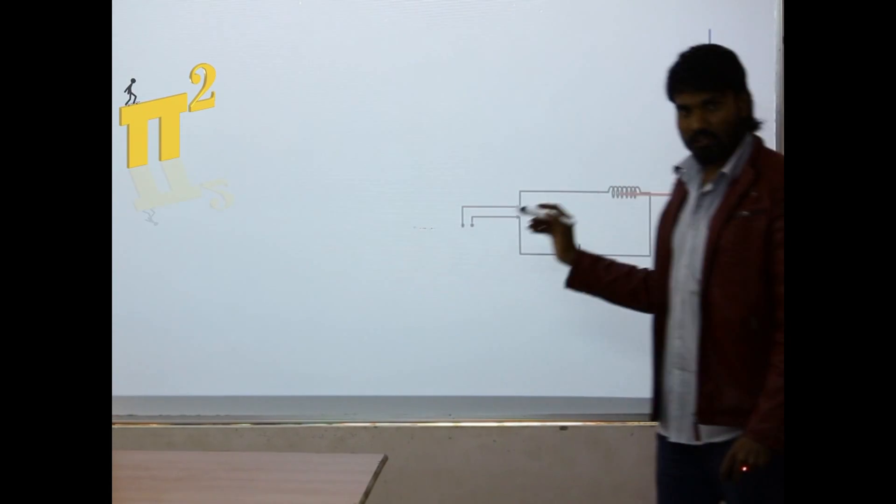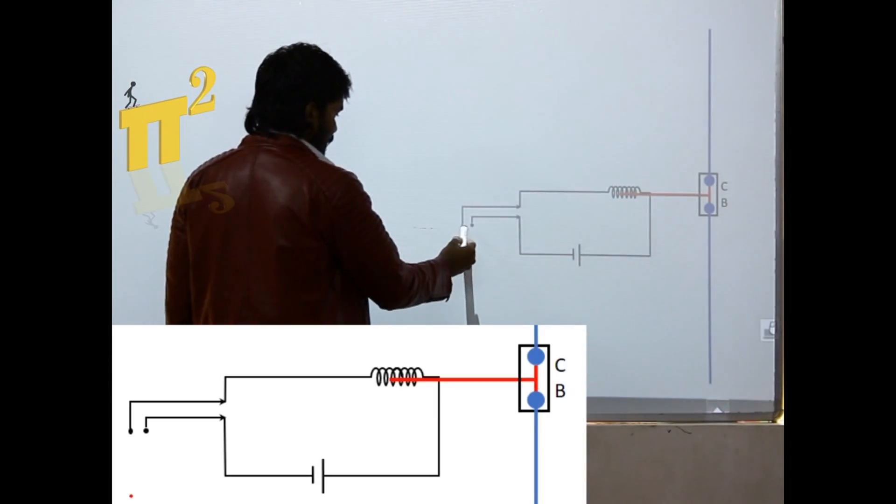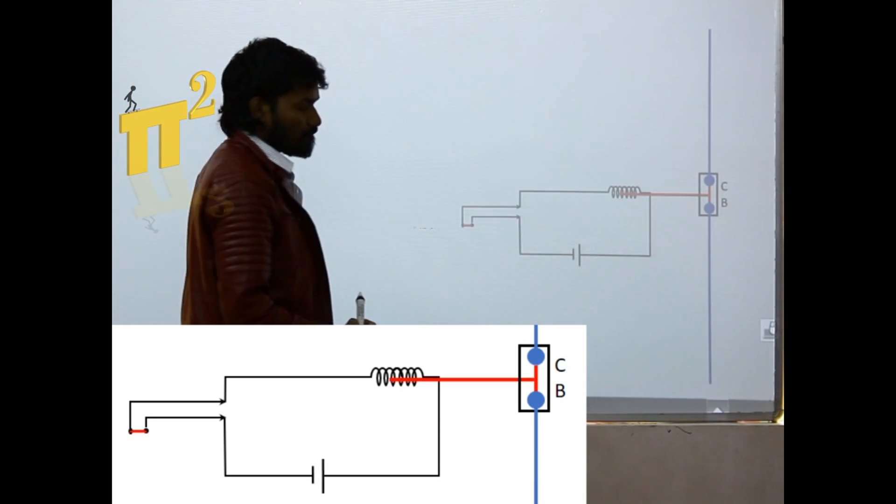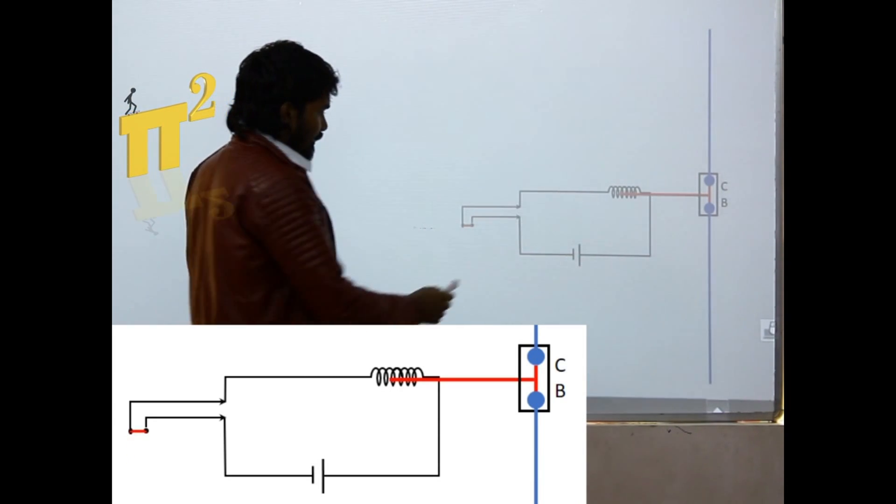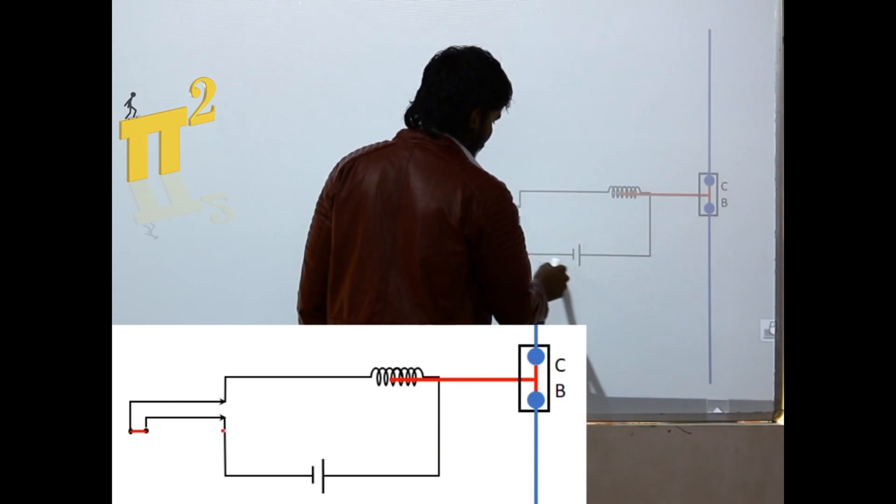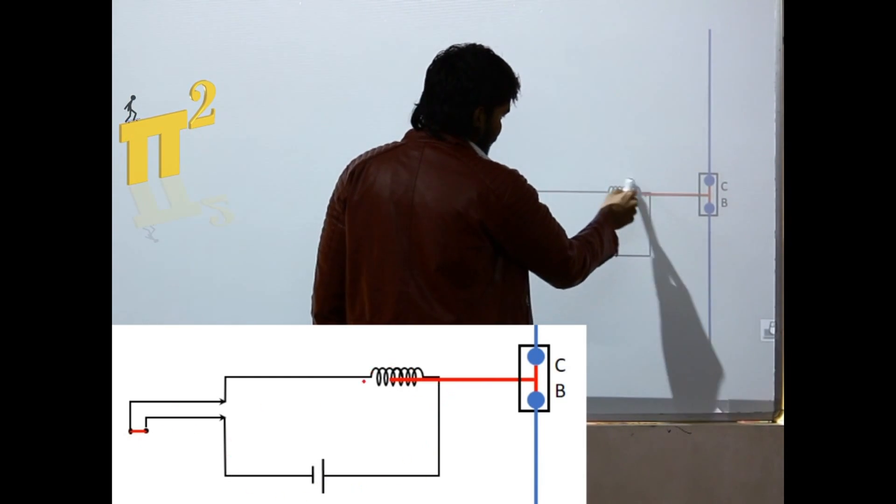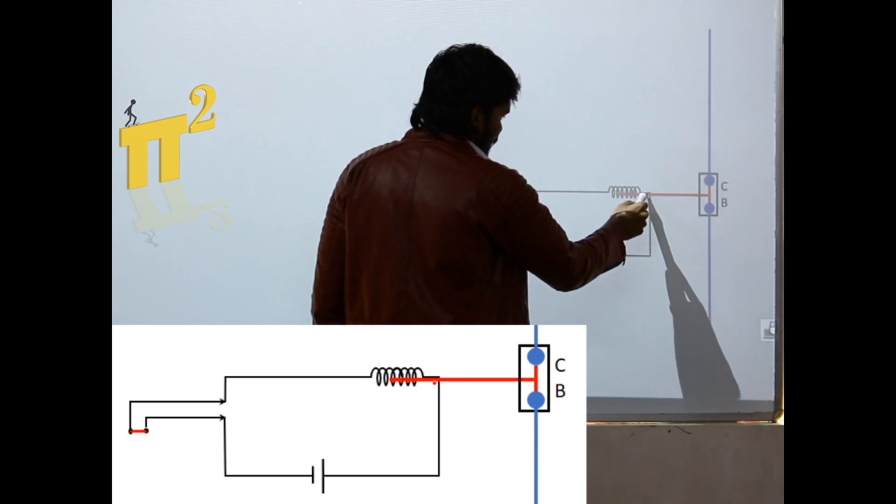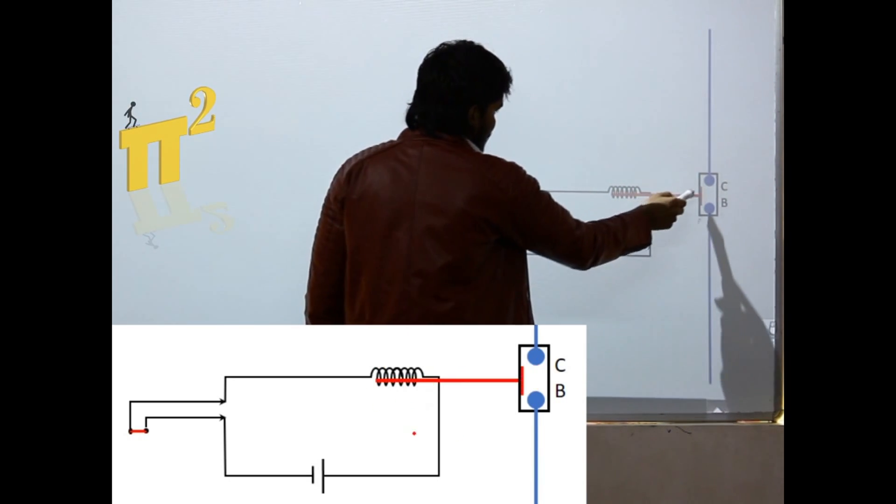When there is a fault, if I could short these two contacts, then current flows through this circuit. Hence this trip coil will attract this plunger inside and the circuit breaker is opened.